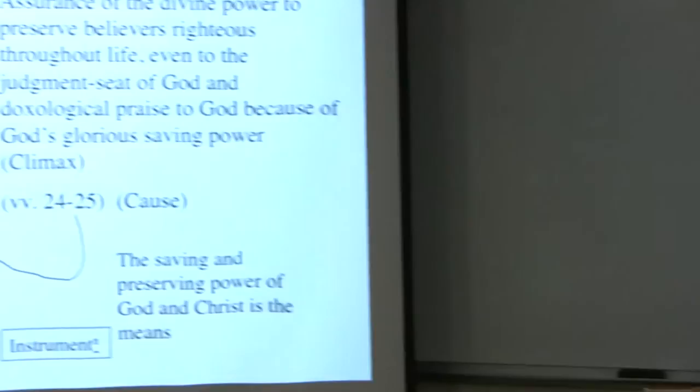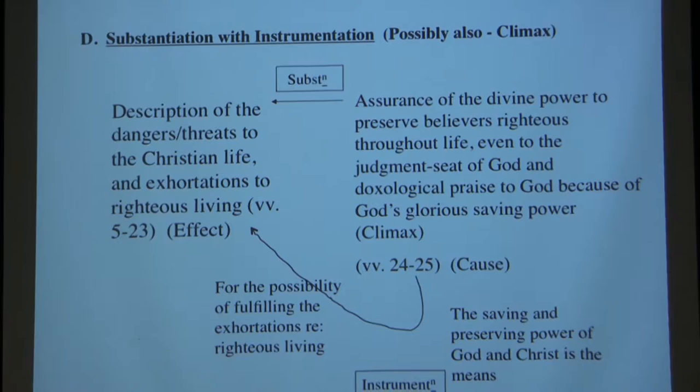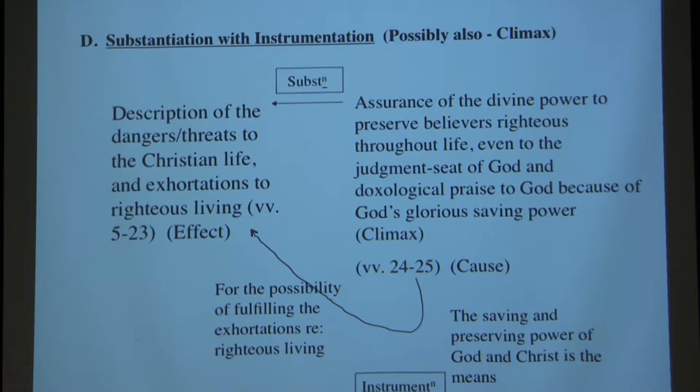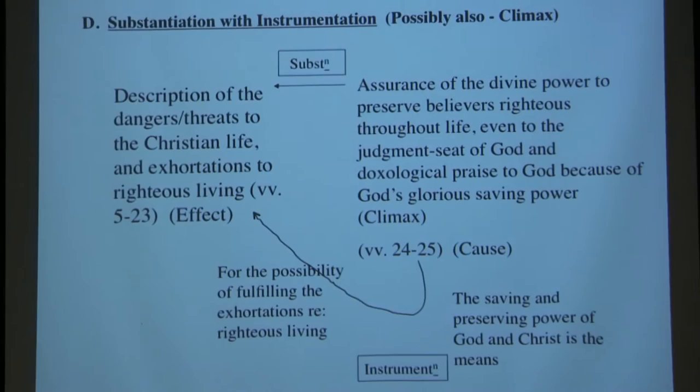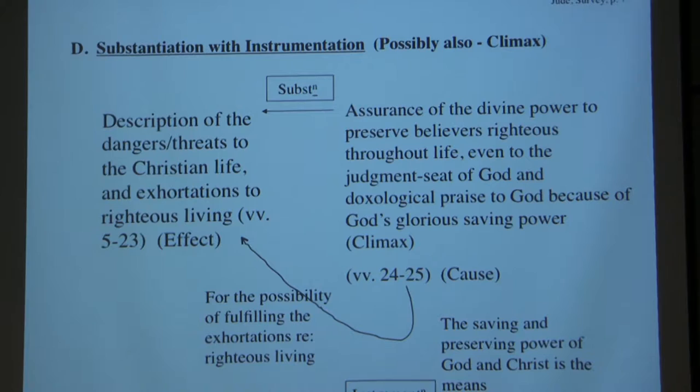We have a conclusion, an epistolary conclusion in verses 24 and 25, presented as a doxology: 'Now to him who is able to keep you from falling and to present you without blemish before the presence of his glory with rejoicing, to the only God our Savior through Jesus Christ our Lord, be glory, majesty, dominion, and authority before all time and now and forever. Amen.' What we have in verses 5 through 23 is a description of dangers to the Christian life and exhortations to righteous living, which may actually be substantiated by verses 24 through 25.